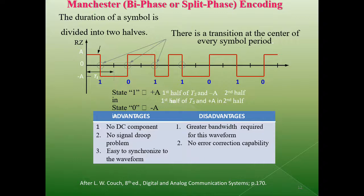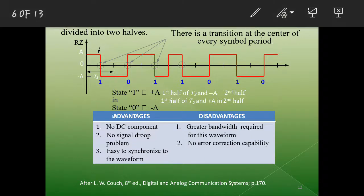Next, we move on to the next type of code called as Manchester bi-phase or split-phase encoding. The duration of the symbol is divided into two halves and there is a transition at the center point of every symbol period. These two are the important things to be noted. There is a center point transition, it is divided into two halves. We will have the signal now to be taken.